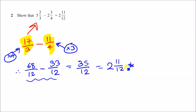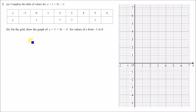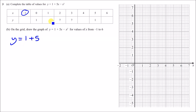Number three: complete the table of values for this equation. All we have to do is replace x with each value, put it in the calculator, and get the y value. For example, plugging in minus one: y equals one plus five times minus one, minus minus one squared. Wrap the substituted value in brackets. You should get a result of minus five.